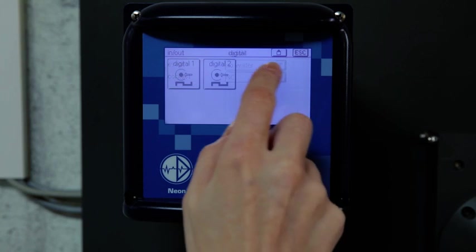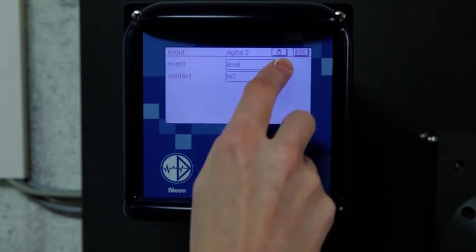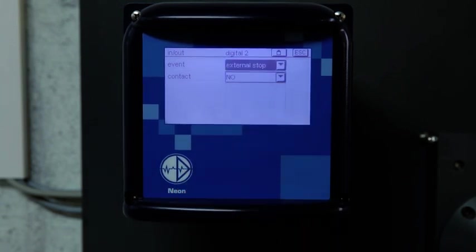If you have purchased a second digital input, you may use that one for controller stop as well, either as level monitor, so that dosing is stopped when the reagent container is empty, or as an external switch which allows you to stop the controller externally, for instance for batch procedures.